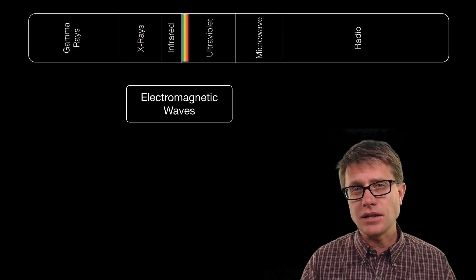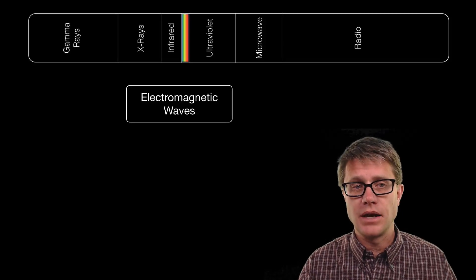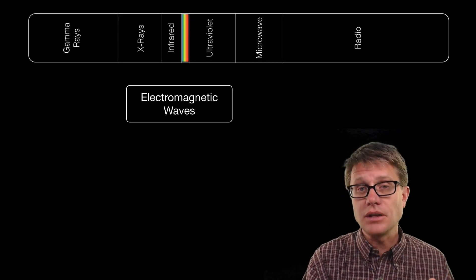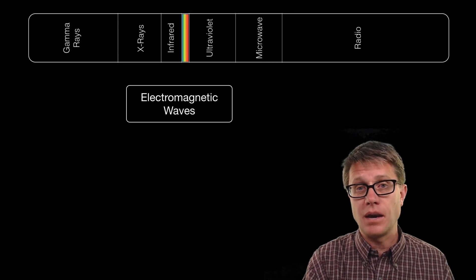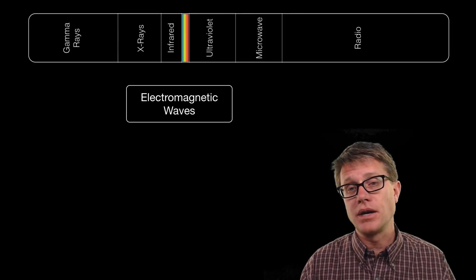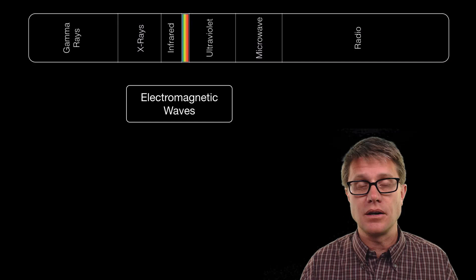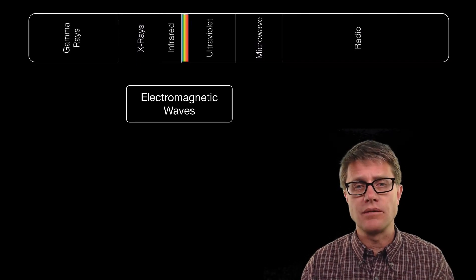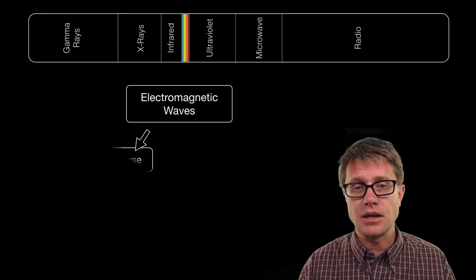The electromagnetic spectrum is made up of these electromagnetic waves. They go from high energy, really high frequency, low wavelength gamma rays all the way down to long wavelength, low energy radio waves. Remember you are only seeing a small portion of that, but the one thing these all have in common is that they are made up of electromagnetic waves.